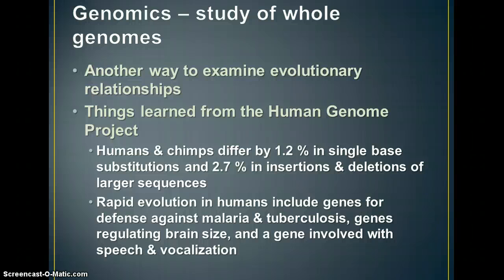And the last topic in this particular set of notes is about genomics. This is the study of whole genomes of organisms. This is a new way that we have of examining evolutionary relationships. This includes things like the Human Genome Project. And here are some things that have been learned from that. This is just a few of the many, many hundreds of things that have been learned from the Human Genome Project where they analyze the entire human genome.